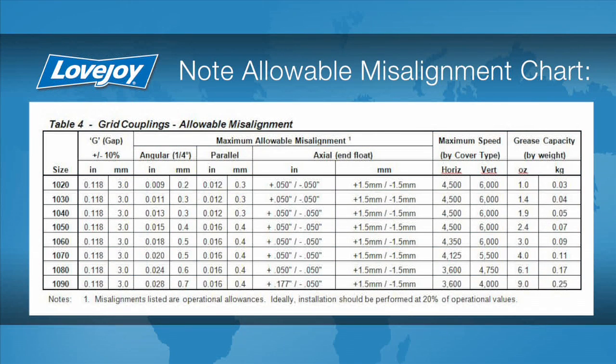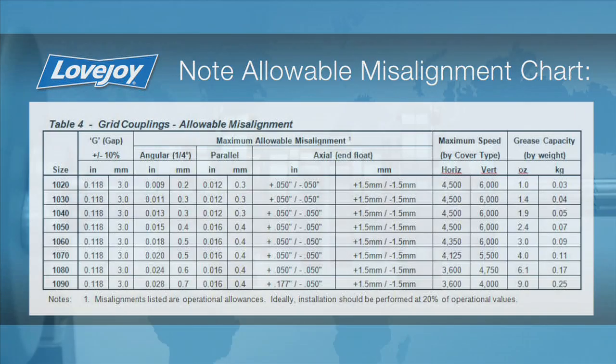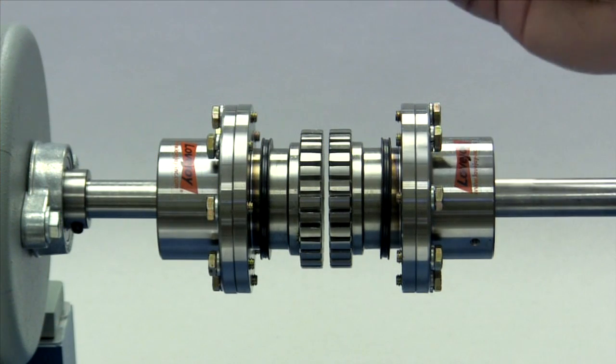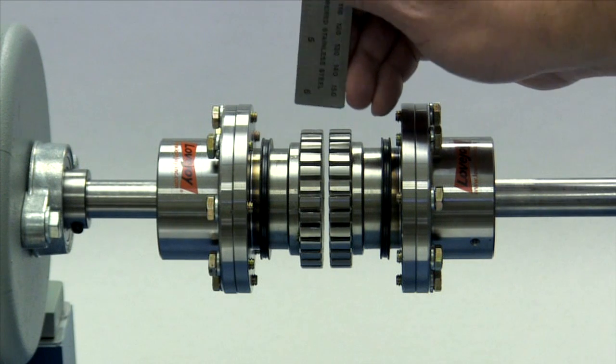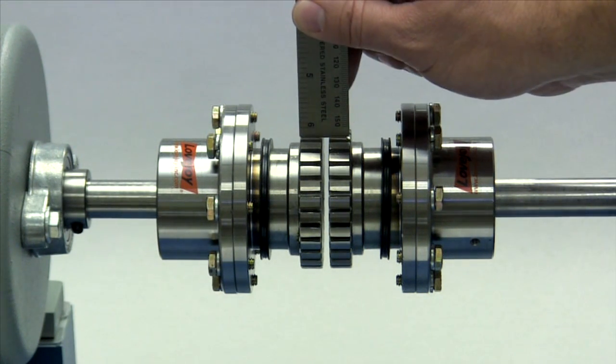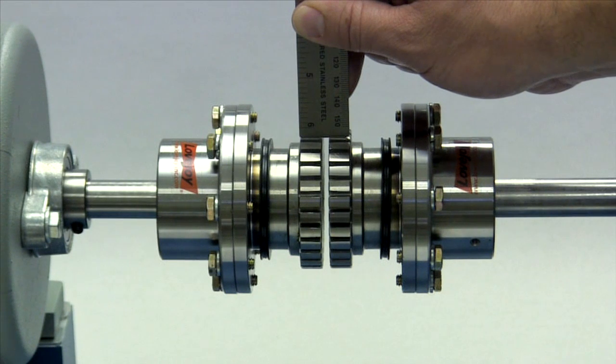The angular and parallel alignment of the equipment shafts is critical to the life and performance of the grid style coupling. The maximum angular misalignment is only a quarter of a degree, and the maximum parallel misalignment is listed in the installation guide. To check the basic alignment, start by laying a straight edge across the major diameter of the hubs. The maximum allowable parallel offset should not exceed the amount for your particular coupling size as specified in the installation guide.